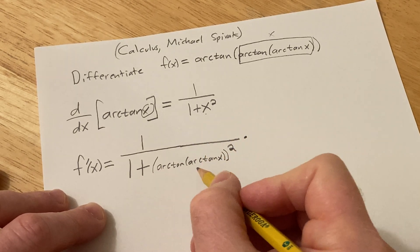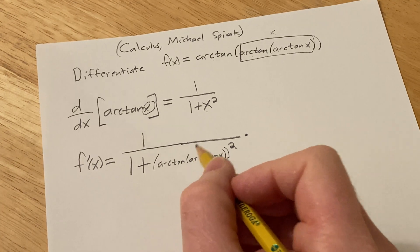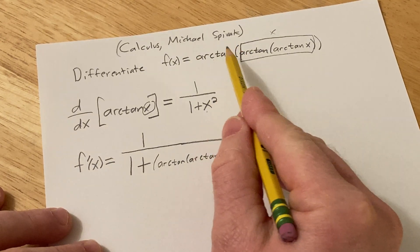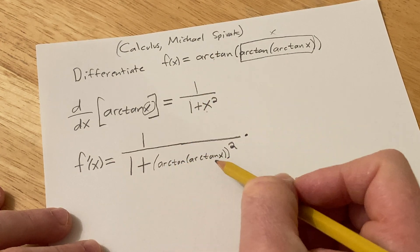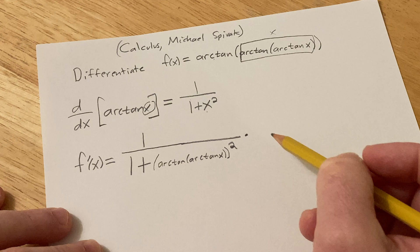And then you have to multiply now by the derivative of the inside. That's the chain rule. So you take the derivative of the outside, which is this formula here, leave the inside untouched, and then you multiply by the derivative of the inside.